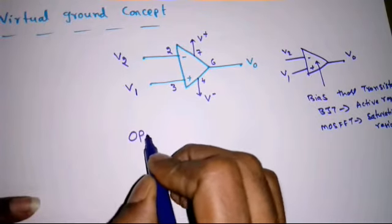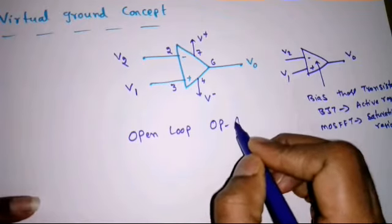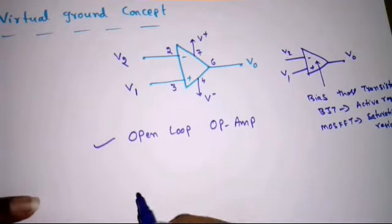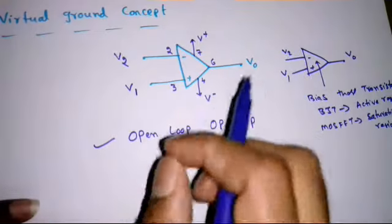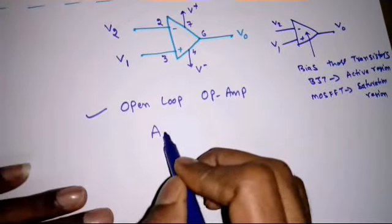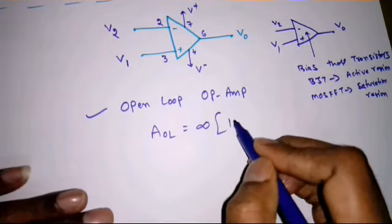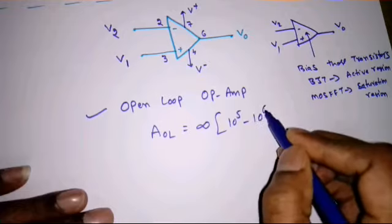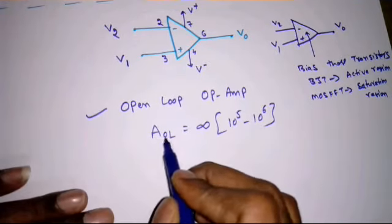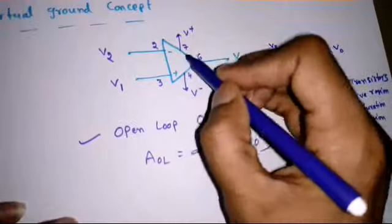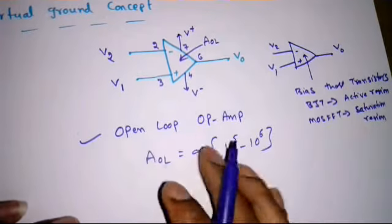When we connect the op-amp without any feedback, it is called open loop operation. When the operational amplifier is connected in open loop, it provides a voltage gain of infinity ideally, or practically 10⁵ to 10⁶. This open loop voltage gain is denoted AOL, or sometimes simply A.